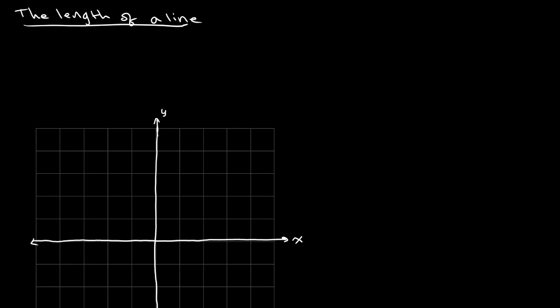So the equation for the length of a line PQ, where P and Q are two separate points on the graph, is equal to the square root of x2 minus x1 whole squared plus y2 minus y1 whole squared.